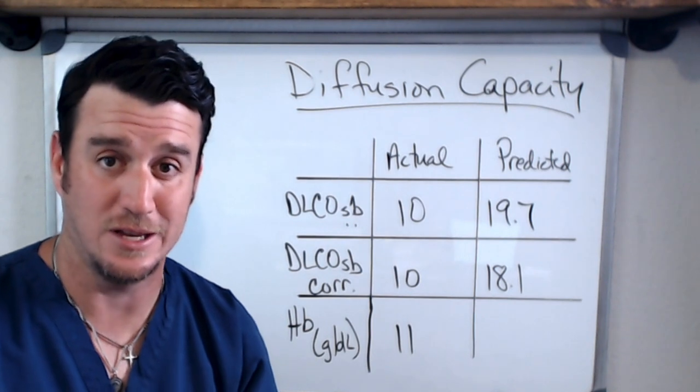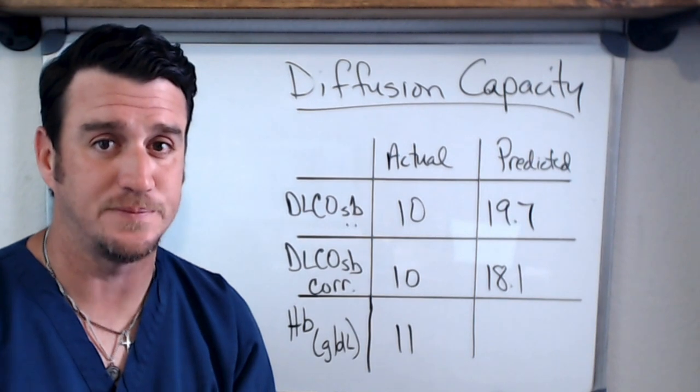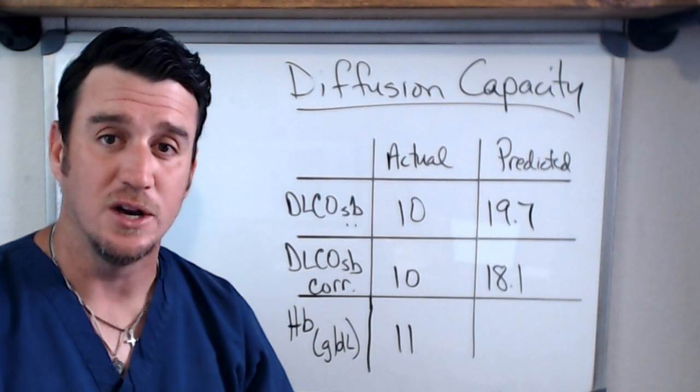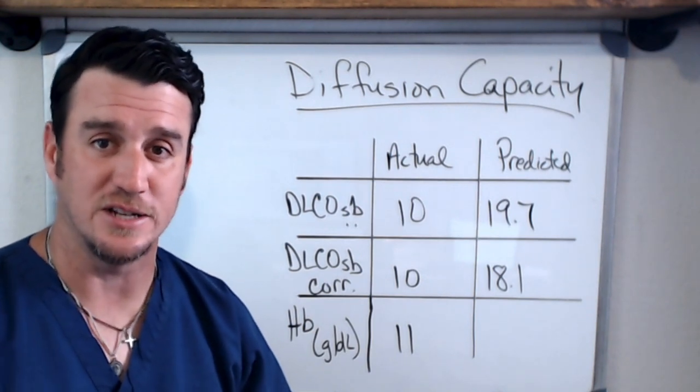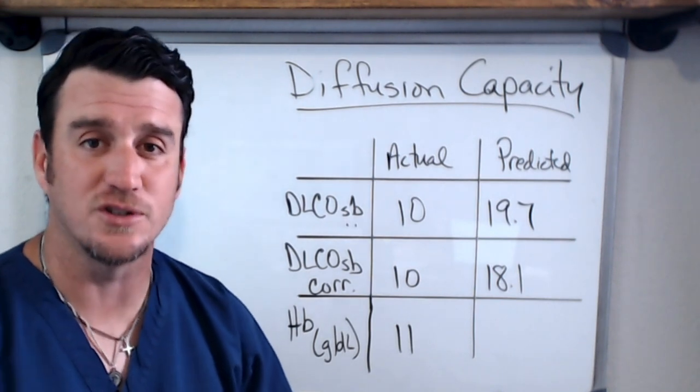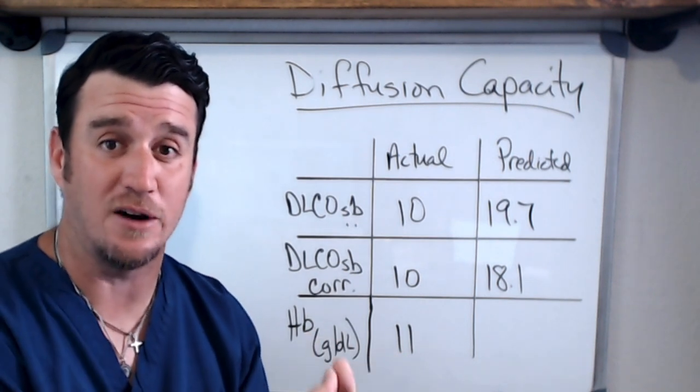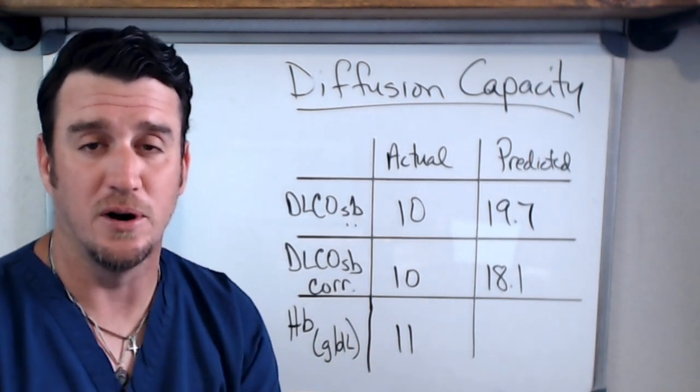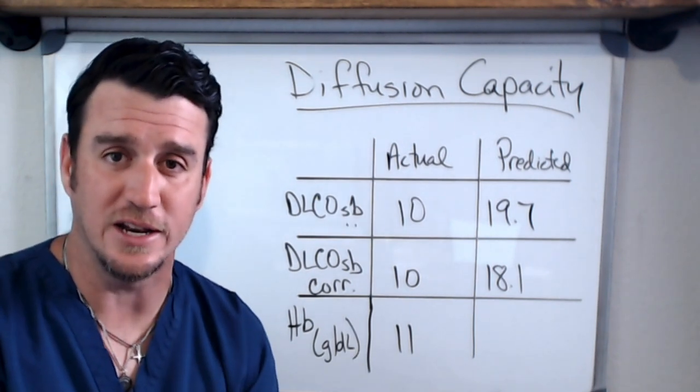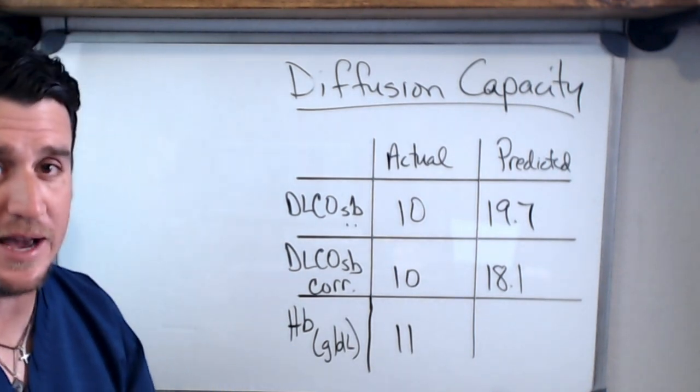So remember, normal is 80 to 120 percent. Anything less than 80 is impaired and you know you're dealing with impaired gas exchange at the alveolar level, which could also be referred to as external respiration. We know external respiration is the exchanging of gas from the alveoli to the pulmonary capillaries. That's external respiration and that's what this study gives us an indication of. Now when we break this example down that's here on the board...